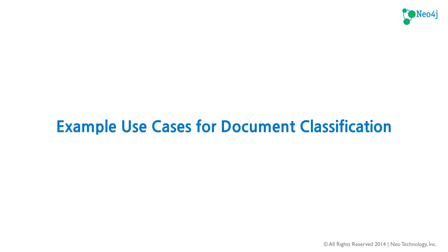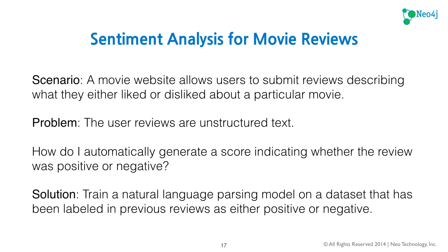I thought it'd be a good idea to go over a few use cases to see why this would be an excellent tool alongside Neo4j. The first use case is sentiment analysis for movie reviews. We have a movie website where users submit reviews describing what they liked or disliked about a movie. The problem is that user reviews are unstructured natural language text. The question is: how do you automatically generate a score indicating whether the review was positive or negative? The solution is to train a natural language parsing model on a dataset already labeled as positive or negative, then use that model to classify unlabeled text.